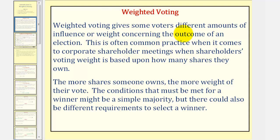Weighted voting gives some voters different amounts of influence or weight concerning the outcome of an election. This is often common practice when it comes to corporate shareholder meetings, where shareholders' voting weight is based upon how many shares they own. The more shares someone owns, the more weight their vote carries. The conditions that must be met for a winner might be a simple majority, but there could also be different requirements to select a winner.